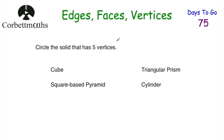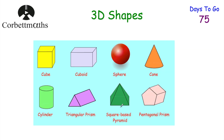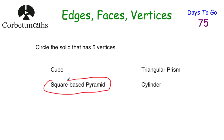Circle the solid that has five vertices. The choices are a cube, a triangular prism, a square-based pyramid, and a cylinder. The cube has eight vertices, the triangular prism has six. A square-based pyramid has four vertices on the base and one at the top — five vertices in total. A cylinder doesn't have five vertices. So the answer is a square-based pyramid. Well done if you circled that.